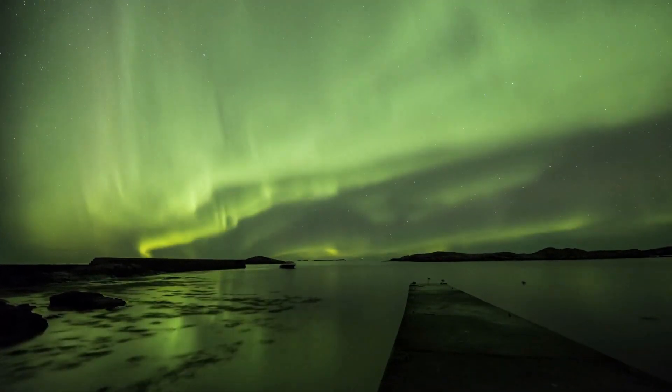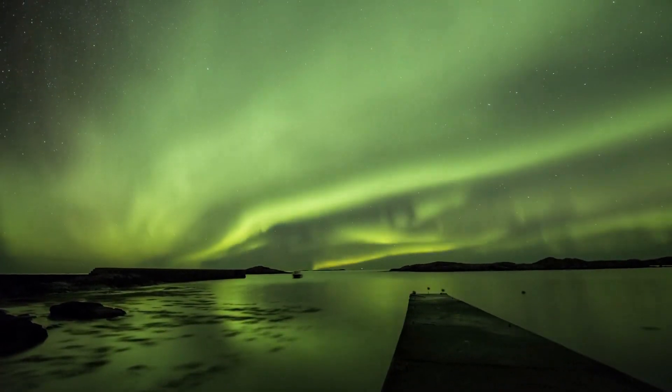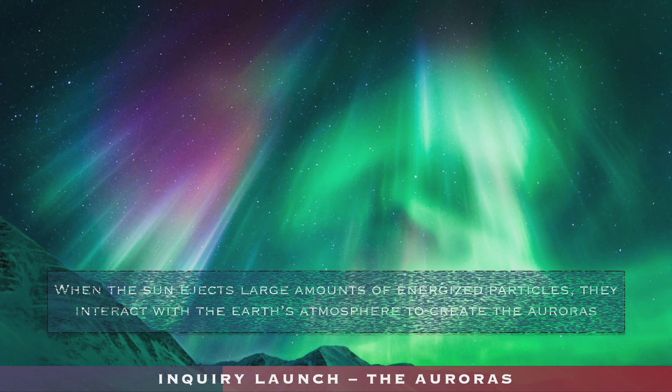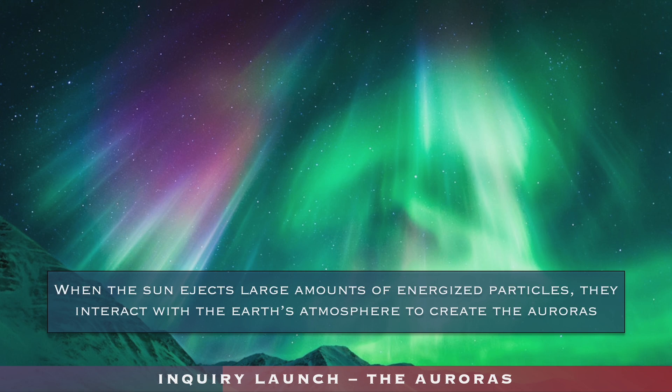Another everyday phenomenon you may have seen in pictures or videos, or if you were lucky, in person, is the aurora — a beautiful dancing light show in the night sky near the Earth's poles. How do these incredible colors come about? They happen when the sun ejects or sends out large amounts of energized particles, and those particles interact with the Earth's atmosphere to create the auroras.